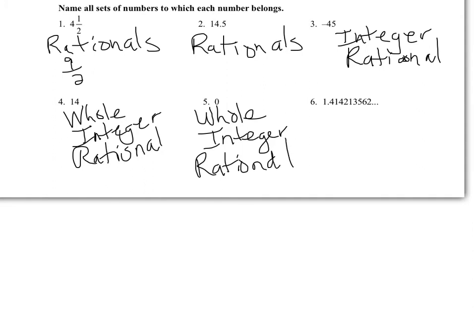Now this next one — 1.414213562, and you notice the dot dot dot keeps going. This is a decimal that keeps going and going, but there's no pattern or repeating pattern to it. So this would be considered irrational. That's what makes it different — it doesn't have a pattern that repeats to it.